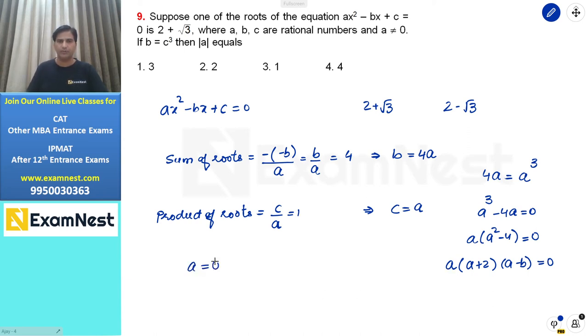Three possibilities: either a equals 0, or a equals -2, or a equals +2. But given that a is not equal to 0, we can reject that, leaving us with two possible values: a = -2 or a = 2.